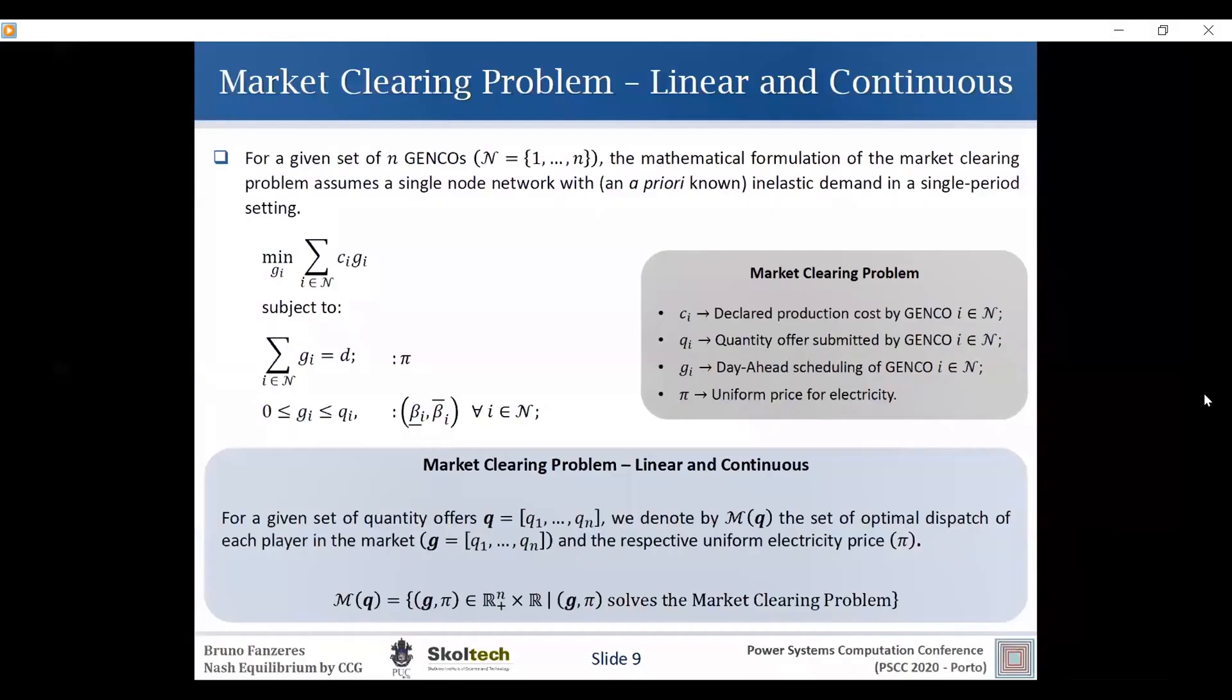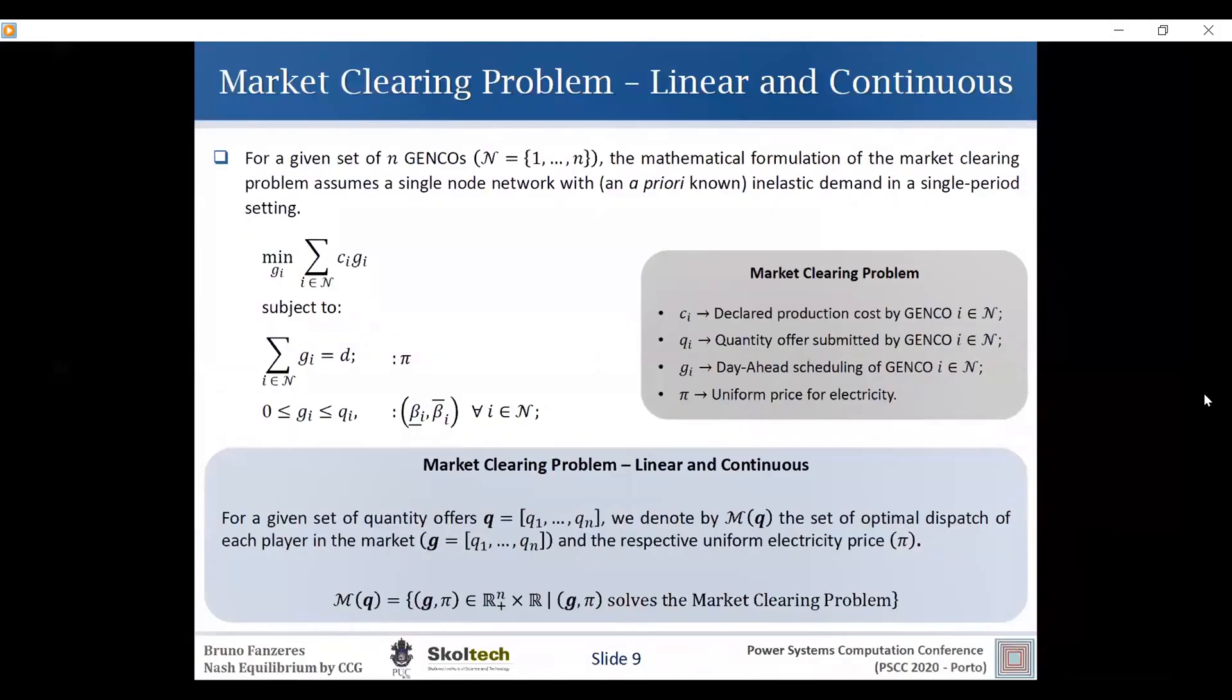So beginning with the market clearing problem, we have here a set of N generation companies. And this is the market formulation that we assume basically a single node market with an inelastic demand in a single period setting. More specifically, we have here that it's a cost minimization procedure with a balance constraint, which gives us the market price of the electricity market price as dual, this variable pie. And the second set of constraints is where the competition happens.